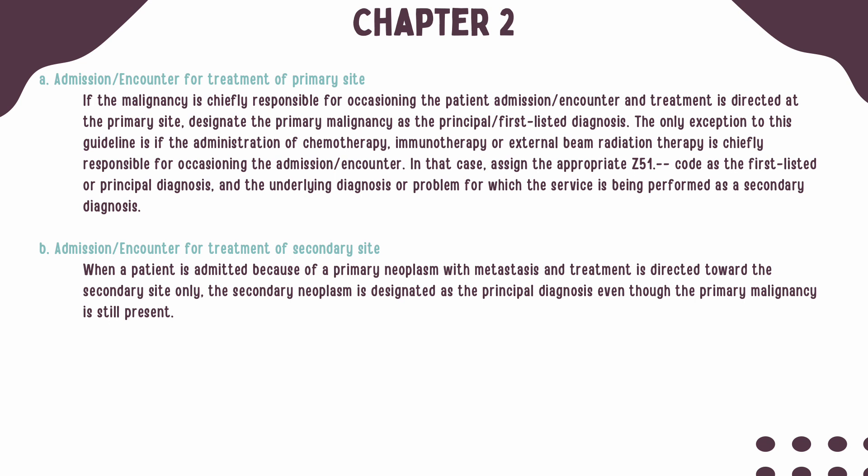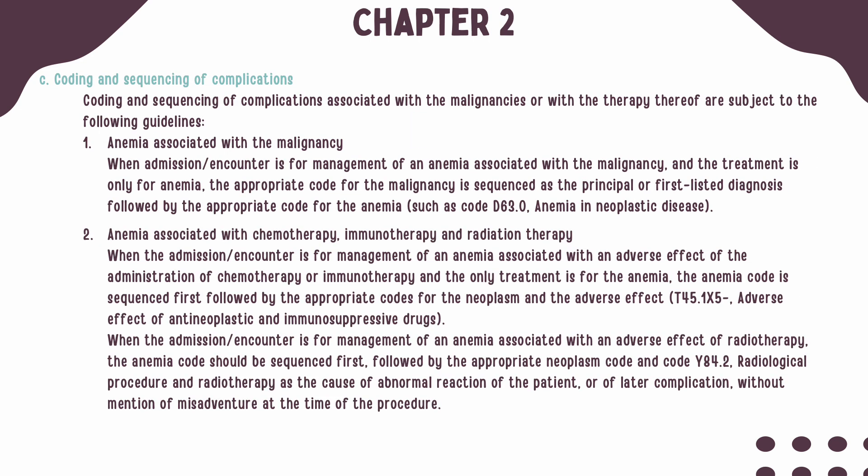The Z51 code should be followed by the underlying diagnosis or condition responsible for the visit. When a primary and secondary neoplasm exist and the treatment is directed towards the metastatic site, the secondary neoplasm should be sequenced first, followed by the primary malignancy if it is still present. When the encounter is for management of anemia associated with a malignancy and the treatment is only directed at the anemia, the malignancy code is sequenced first, followed by the appropriate code for the anemia.